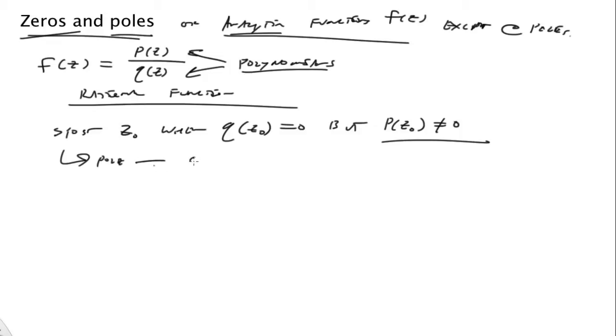And of course, it has some sort of order, an order m, if q of z has a - so this would be a pole of order m for f of z, and q of z is going to be a root of order m.